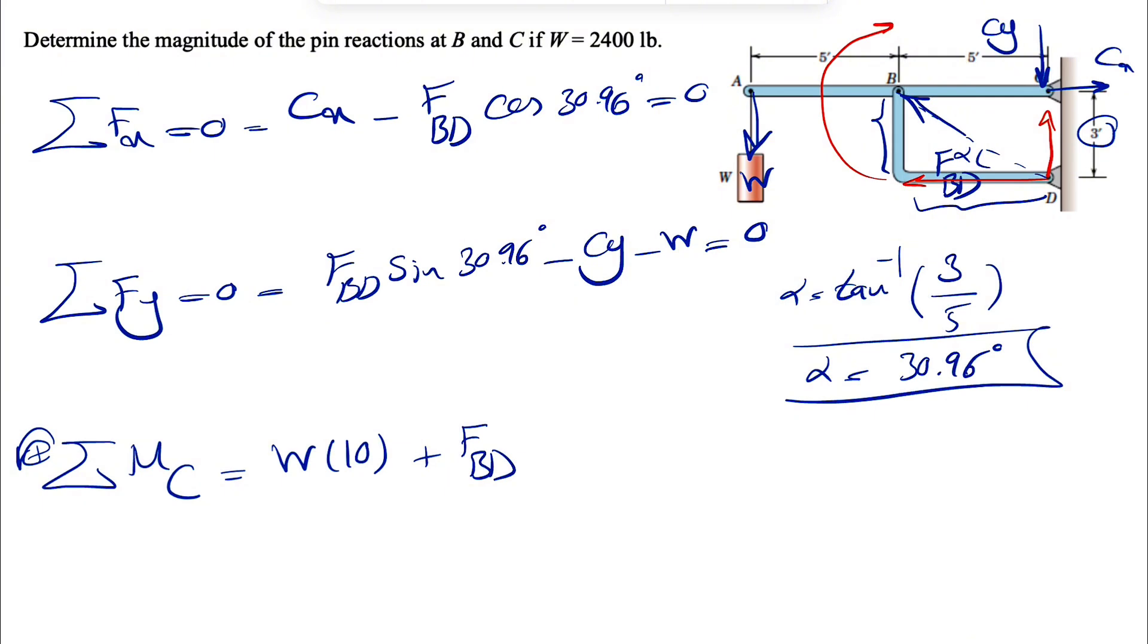So plus FBD cosine of alpha is our X component. And we can show our X and Y, actually, here, too. Let's call our X and Y here. So FBD cosine of alpha would be the X component, cosine of 30.96. And the distance would be the vertical distance to the line of action, which is going to be 3.